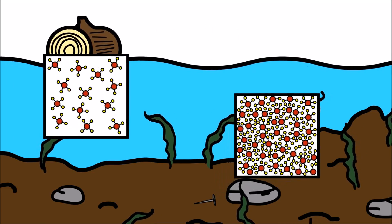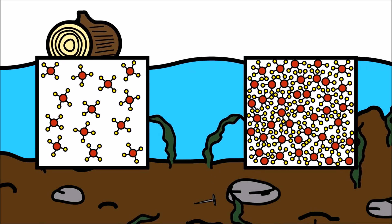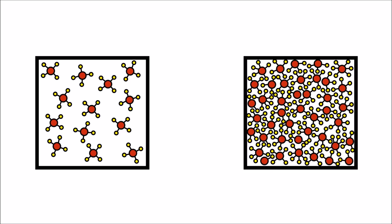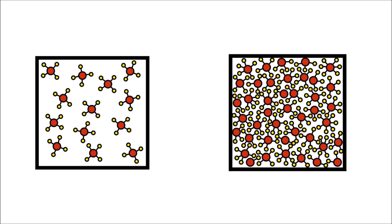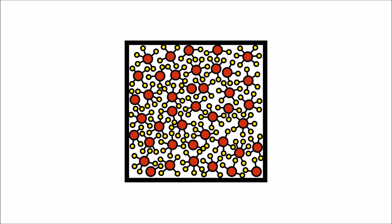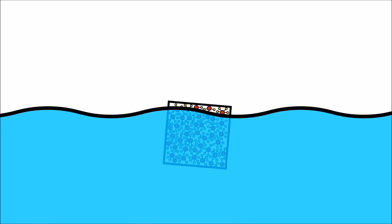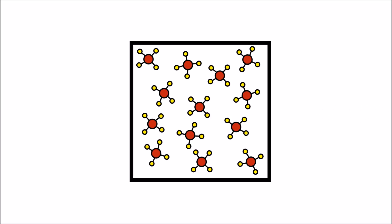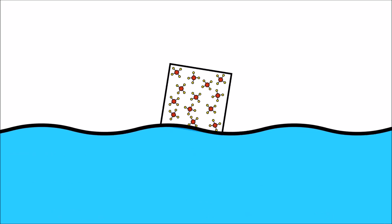All objects are made up of molecules, and molecules are packed differently inside different objects. When molecules are packed closely together, this makes an object more dense, causing it to sink! When molecules inside an object are packed more loosely, this makes an object less dense, causing it to float!